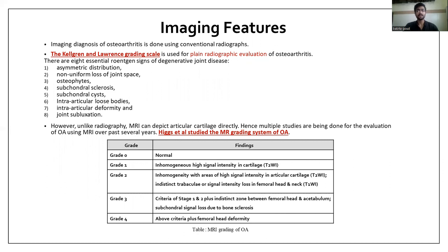For MRI, Higgs et al. studied an MR grading system of osteoarthritis. He gave four grades, with grade zero being normal. Grade one is inhomogeneous high signal intensity in cartilage on T2-weighted image. Grade two is grade one plus indistinct trabeculae or signal intensity loss in the femoral head and neck on T1-weighted image. Grade three includes criteria of stages one and two plus indistinct zone between the femoral head and acetabulum and subchondral signal loss due to bone sclerosis.